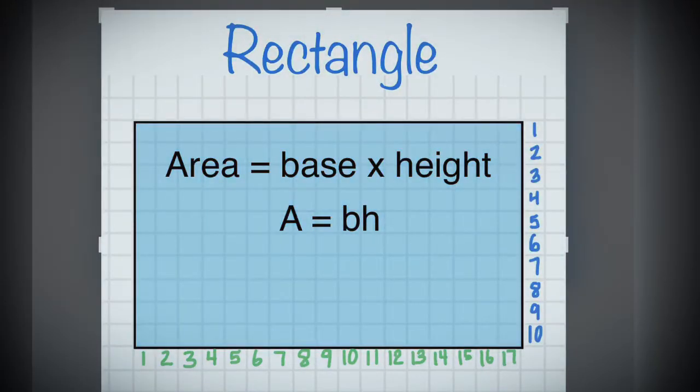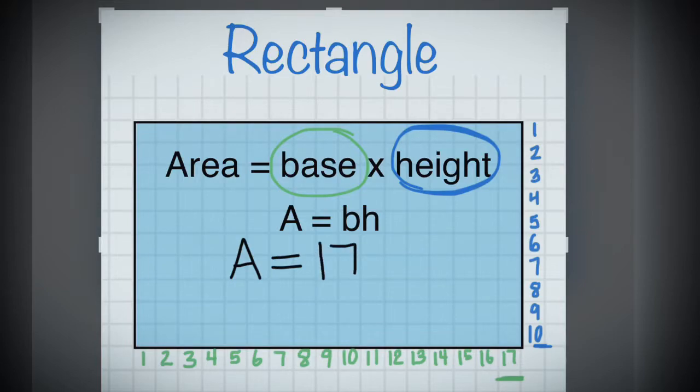Let's review. Remember that to find the area of a rectangle, you must multiply the base times the height. In this rectangle, the base is 17 and the height is 10.